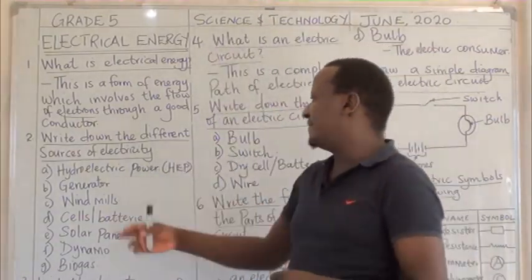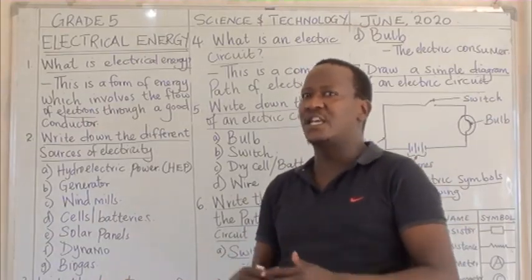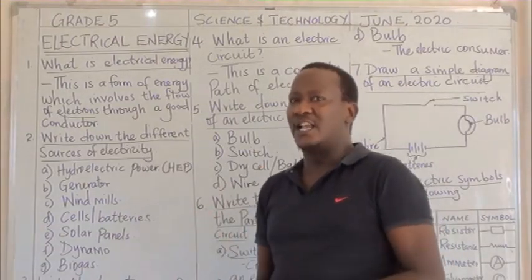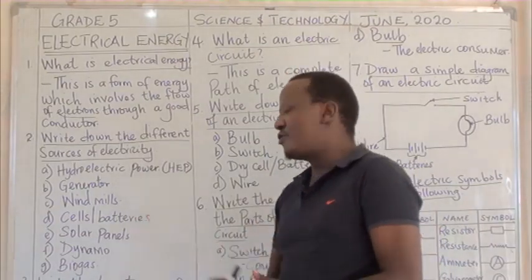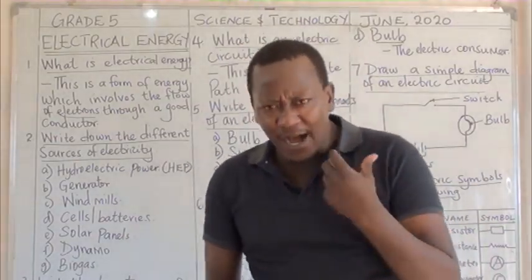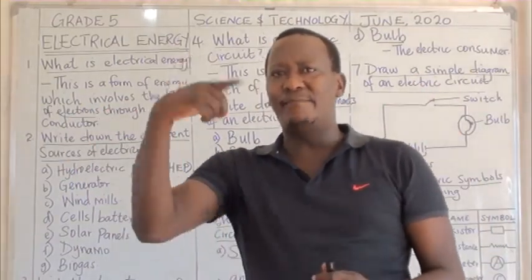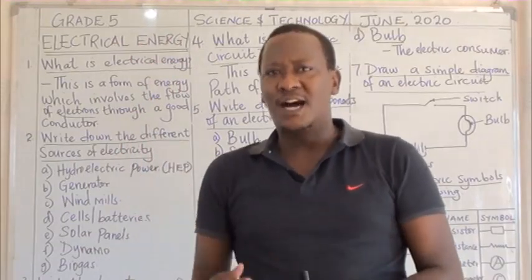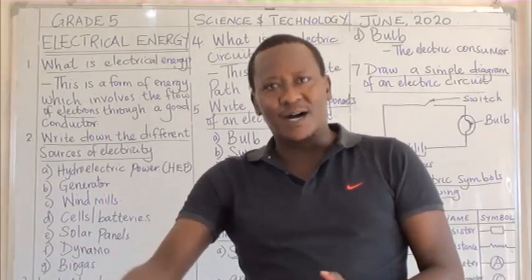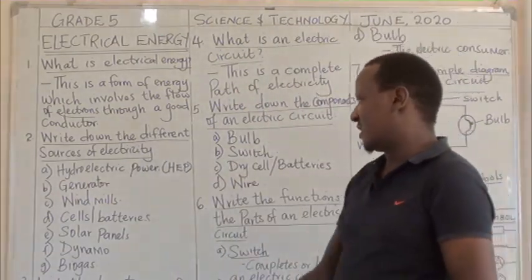Number two, we have generators. In our school, when electricity is off, we always switch on the generators and we continue getting electricity. Number three, we have what we call windmills. Windmills are devices which harness the wind energy and make the turbines rotate, which then make a generator work, resulting in the generation of electricity.